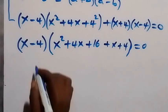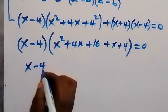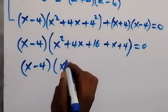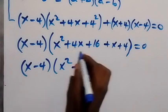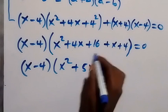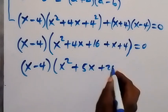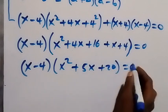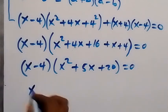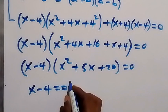Simplifying the second bracket: x² + 4x + x gives 5x, and 16 + 4 gives 20. So we have (x − 4)(x² + 5x + 20) = 0.